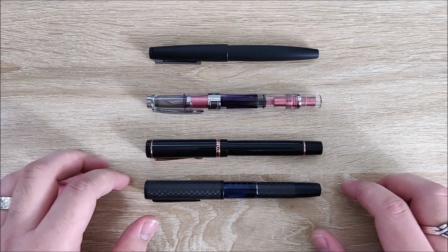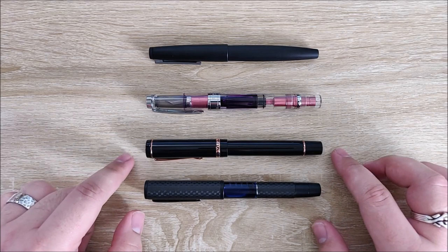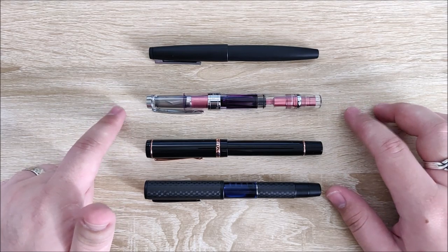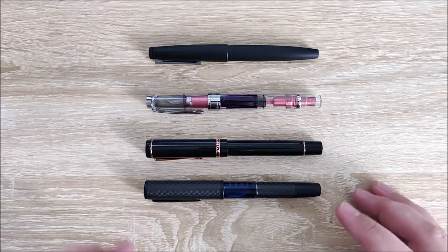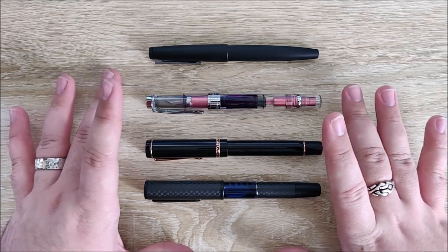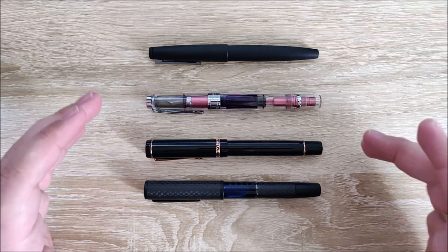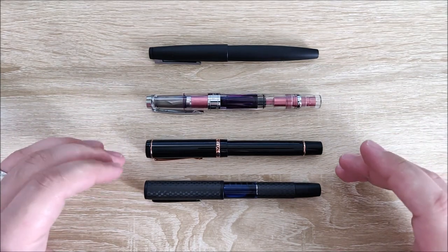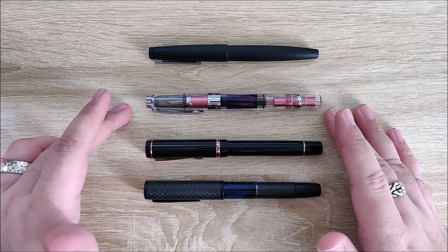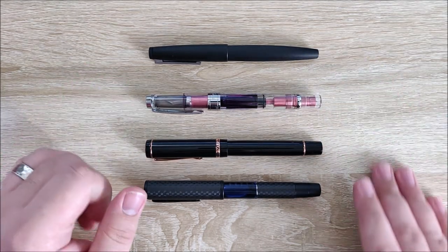On to the size comparison. Here we have the Conklin Word Gauge next to the Conklin DuraGraph, the TWSBI 580, and the Lamy 2000. These are kind of medium size pens to me. It's pretty much the exact same size as the DuraGraph, maybe a tad bit shorter, a little bit shorter than the 580, and about the same length as the Lamy 2000.